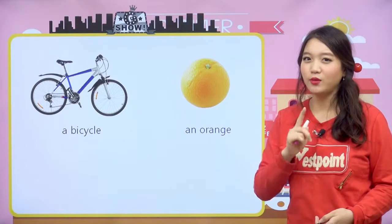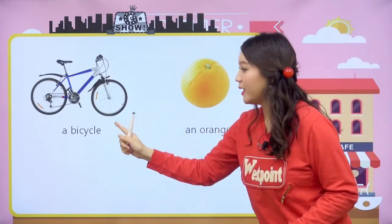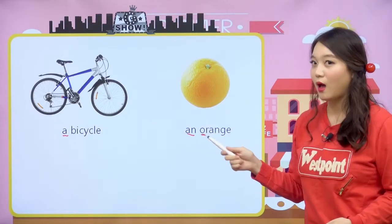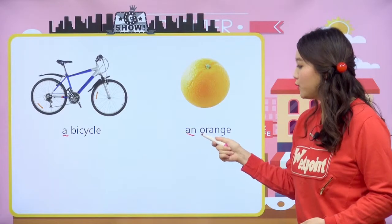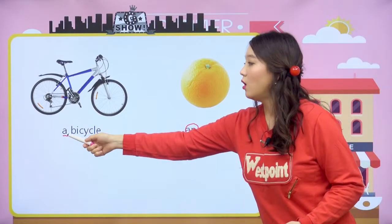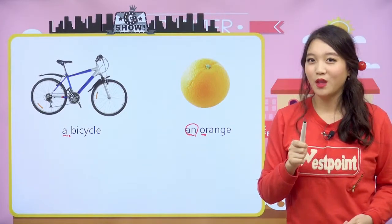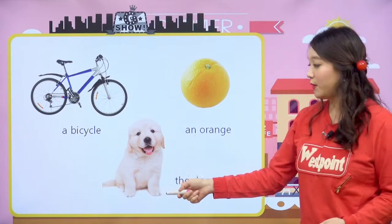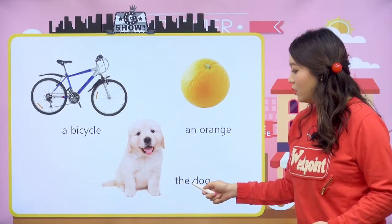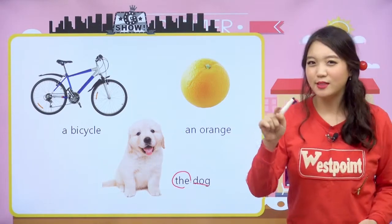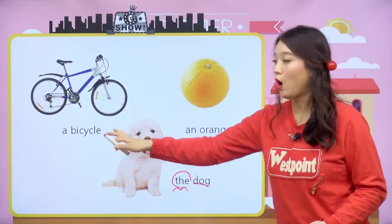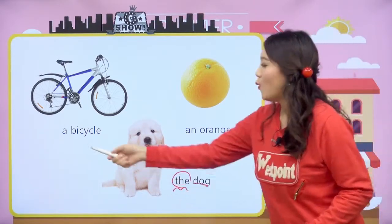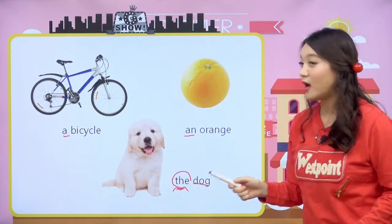우리 선생님이 명사 시간에 간단하게 한번 얘기했는데 기억하는 친구 있을까요? 한 개일 때는 명사가 하나일 때는 앞에 a를 붙이고, a는 언제 붙어요? 앞에 있는 명사의 맨 앞이 다섯 개의 모음 소리로 시작할 때는 an을 붙인다. 그리고 Do you remember this puppy? 그때 봤던 그 puppy를 콕 집어 다시 말할 때는 the를 사용한다고 했었는데 기억하면 완전 최고!